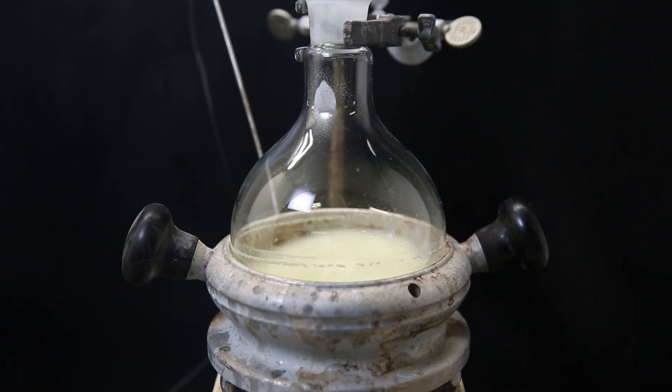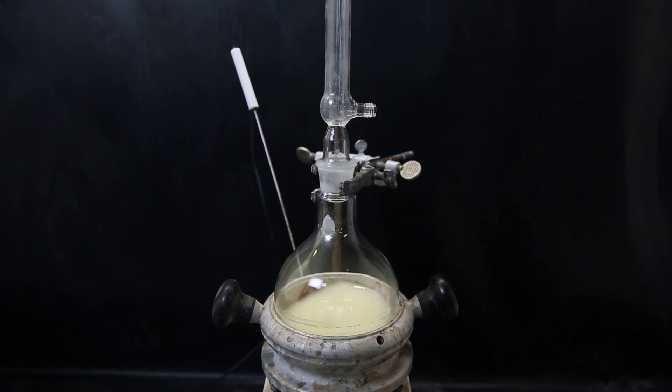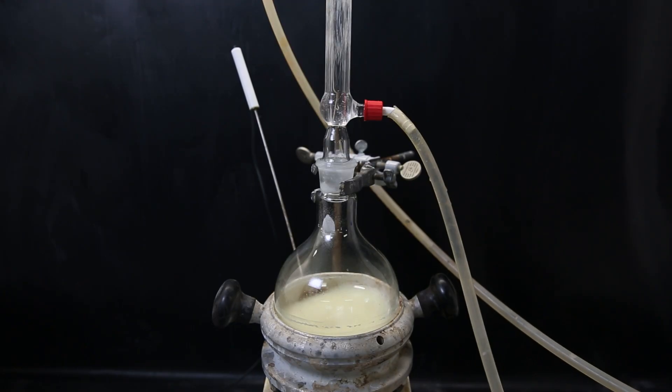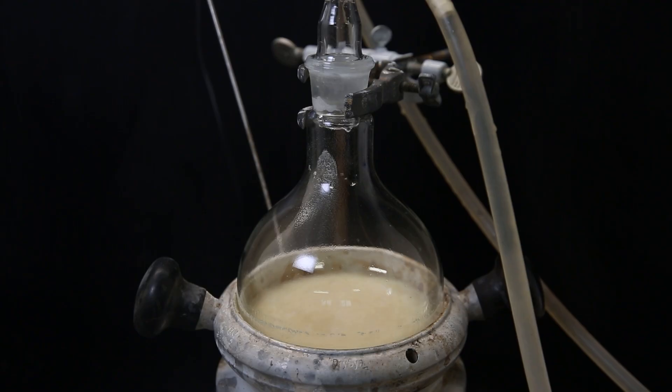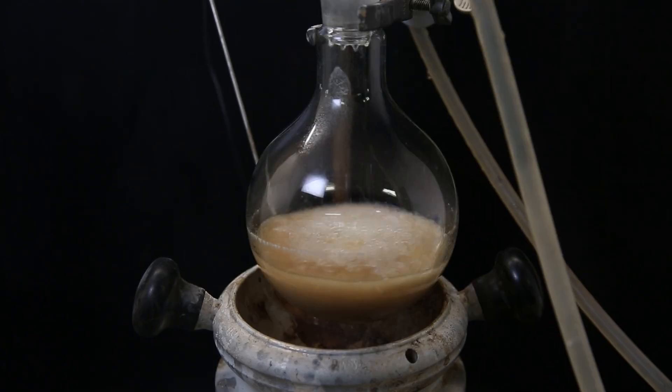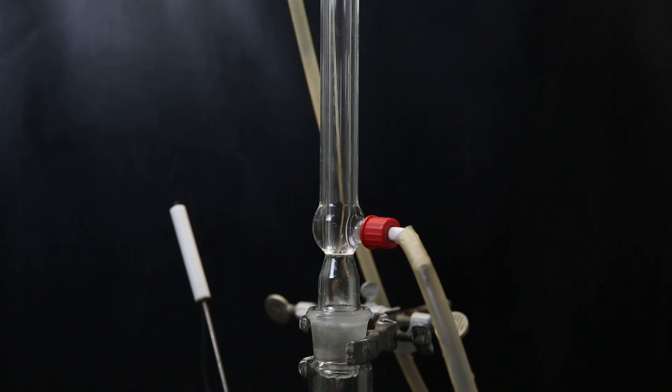And afterwards set the flask in a heating mantle. I attach a condenser and heat the mixture to 100°C. Over time the mixture gradually becomes darker and an exothermic reaction is taking place. It starts to boil vigorously and I have to take it off heat so that the condenser can contain it.